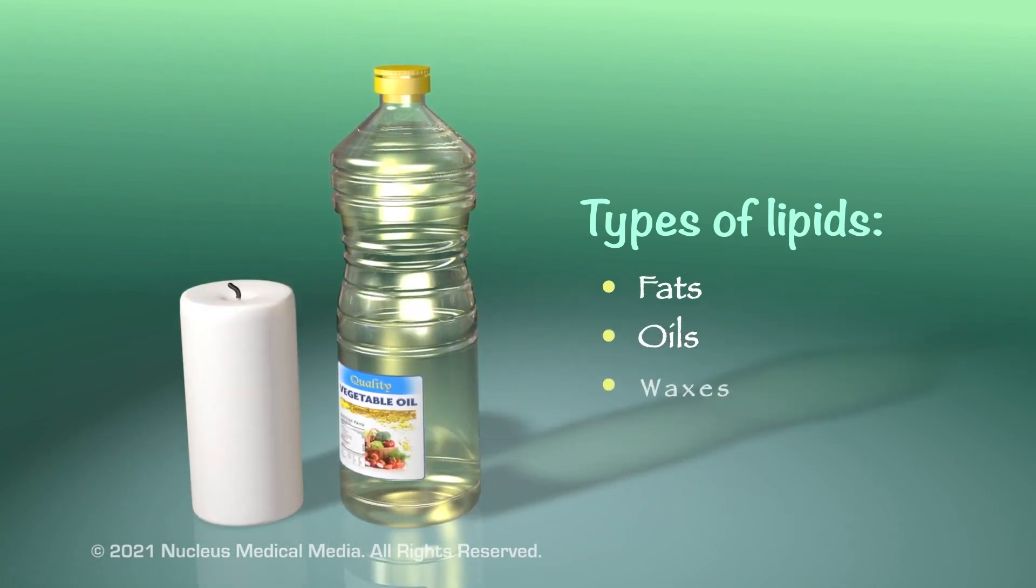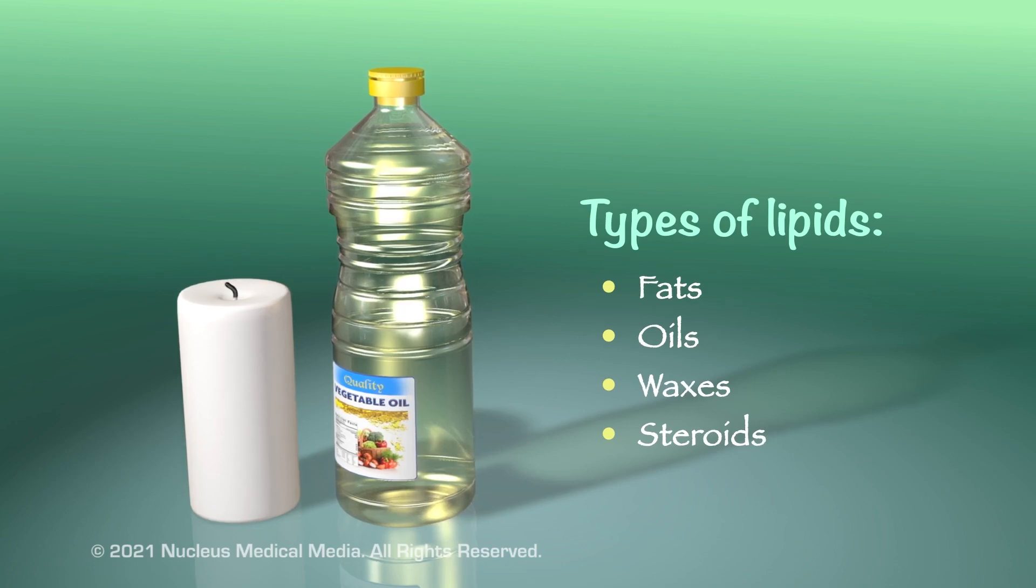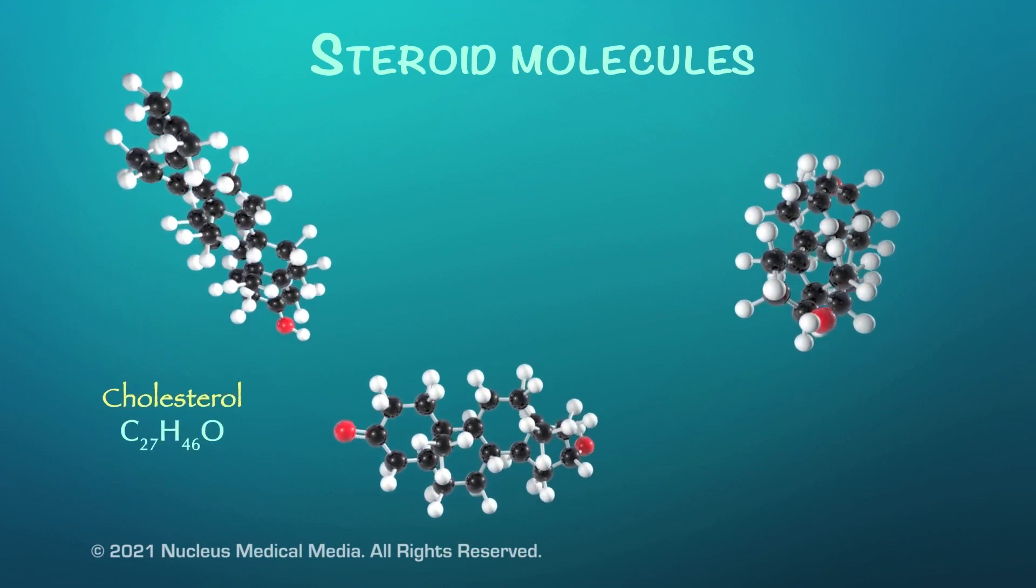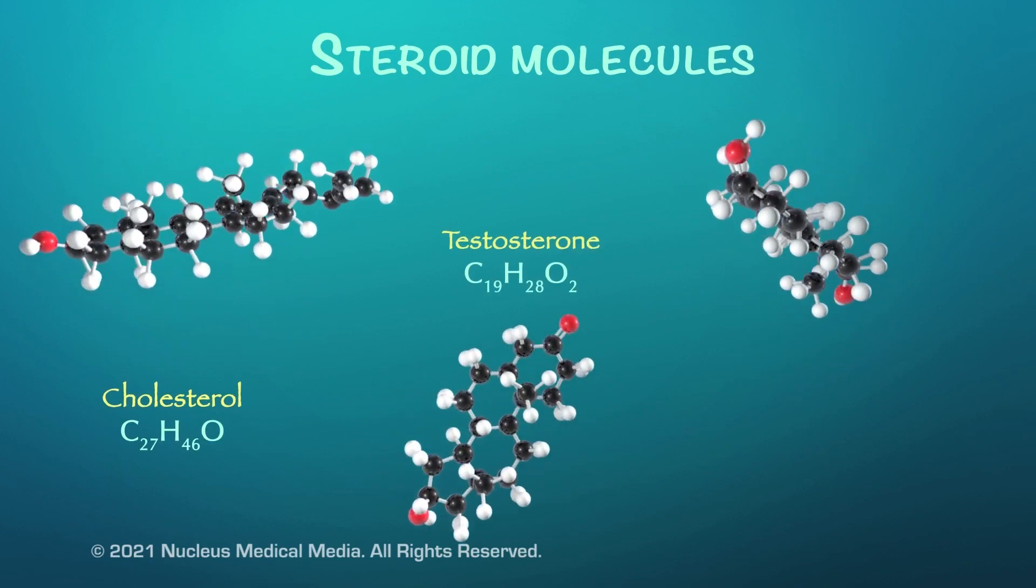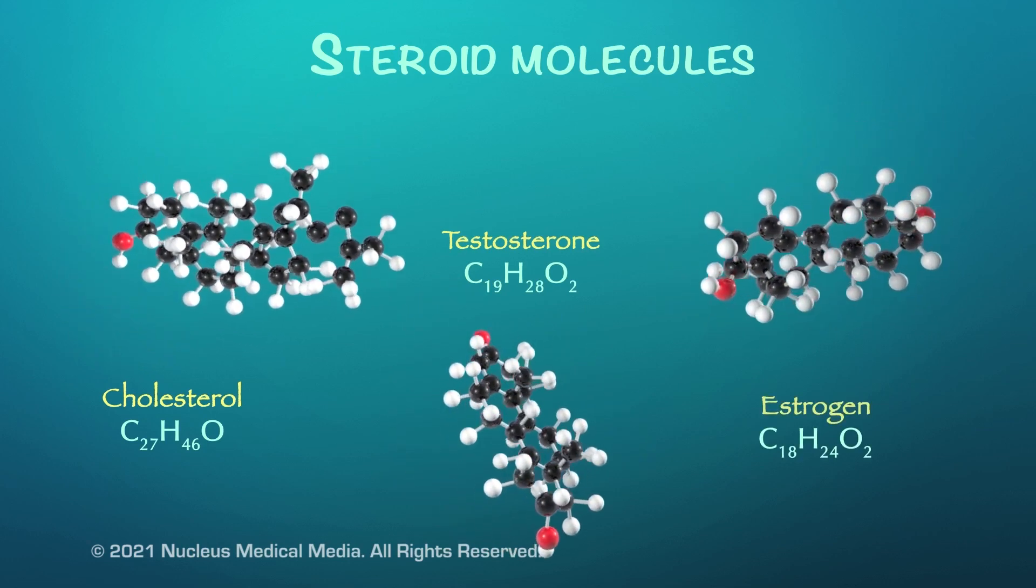Oils, waxes, and steroids are also types of lipids. Examples of steroids include cholesterol and hormones such as testosterone, which is produced in the testicles, and estrogen, which is produced in the ovaries.